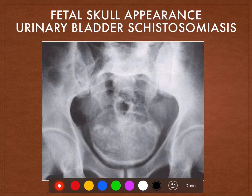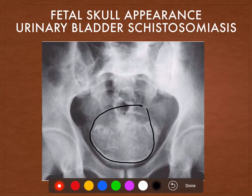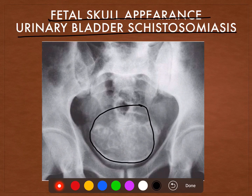There is yet another skull appearance in radiology that we actually see in the pelvis. This is known as the fetal skull appearance, and this is actually the calcification of the urinary bladder. The diagnosis here is urinary bladder schistosomiasis.